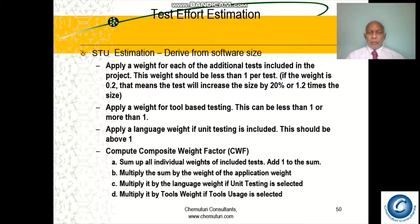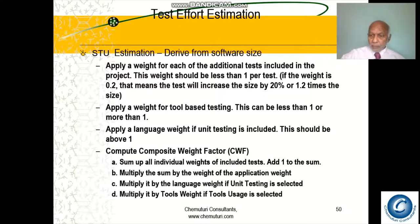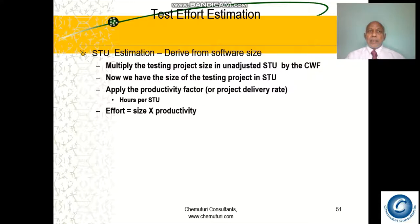Compute the Composite Weight Factor (CWF): sum up all individual weights of included tests, add one (the basic weight), multiply by the application weight, multiply by the language weight if unit testing is included, and multiply by the tools weight if tools are used. Then multiply the unadjusted software test units by the CWF to obtain the testing project size in software test units. Finally, apply the productivity factor (project delivery rate) — effort = size × productivity.